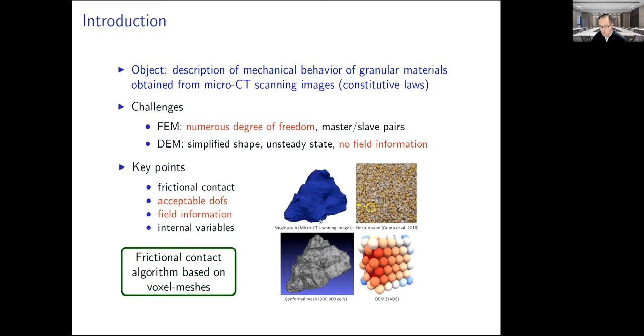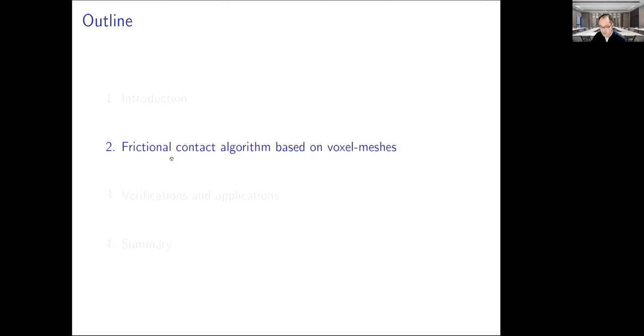However, by using the DEM, we oversimplify the shapes, and the other drawback is that we can't obtain field information for each particle. Therefore, we want to develop a new contact algorithm with acceptable degrees of freedom and field information. That is frictional contact algorithm based on voxel meshes.